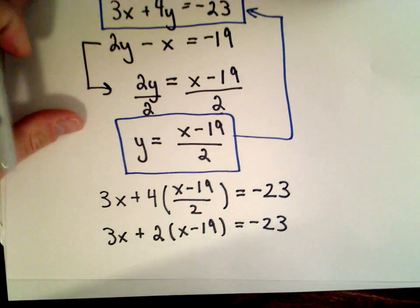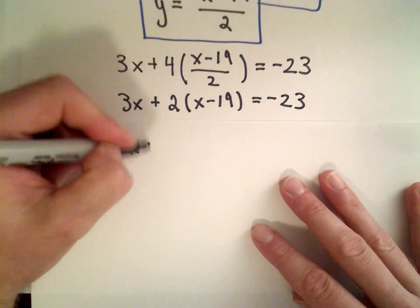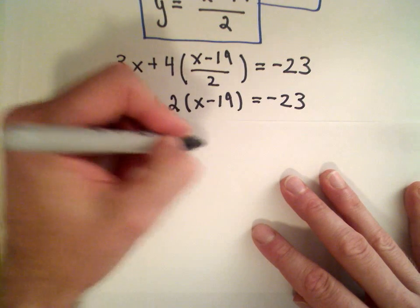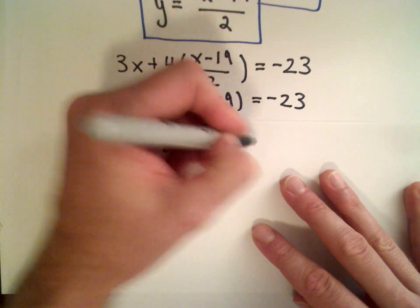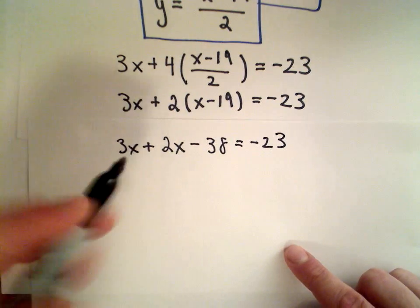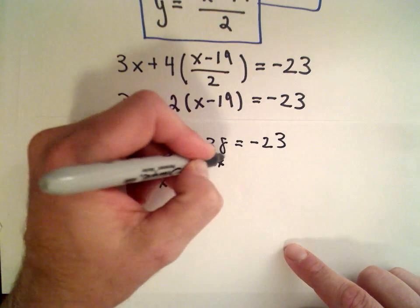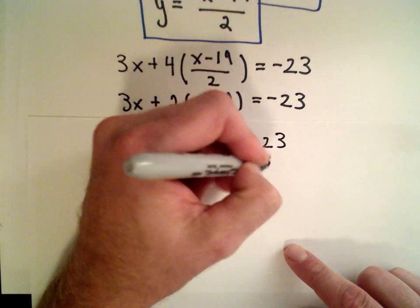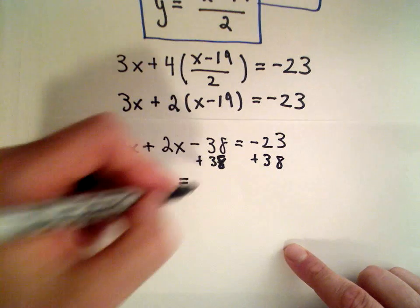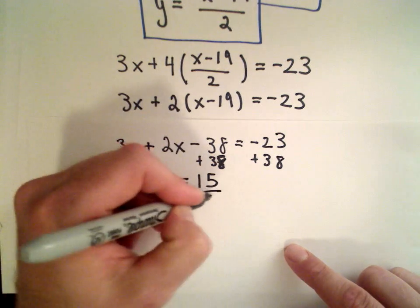I've got 3x plus 2 multiplied by x, which is 2x, and 2 multiplied by negative 19 is negative 38, equals negative 23. So 3x plus 2x is 5x. I would add 38 to both sides. Negative 23 plus 38 gives me positive 15. So 5x equals 15.